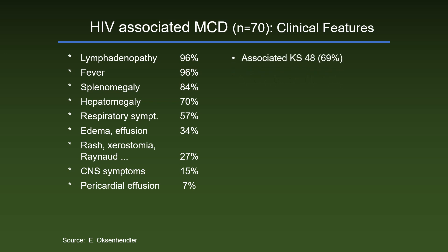A majority of patients have associated Kaposi's sarcoma, which can occur before MCD. The reason is that both MCD and Kaposi's sarcoma are associated with infection by human herpes virus 8, or Kaposi's sarcoma herpes virus. A particular feature of multicentric Castleman's disease, completely unexplained, are spontaneous remissions.